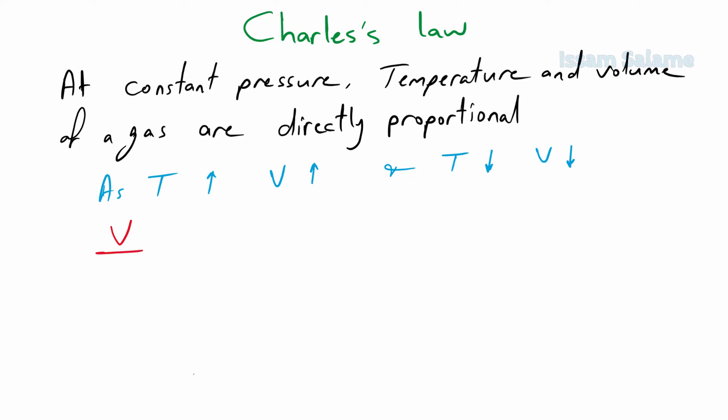But the ratio of the volume to the temperature is always constant, which will give the relationship: initial volume divided by initial temperature equals final volume divided by final temperature, or V1 over T1 equals V2 over T2.